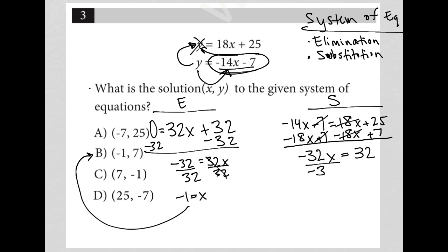And again, I divide by negative 32 this time, and what I'm left with is that x equals negative 1. So again, that would also point to choice B.